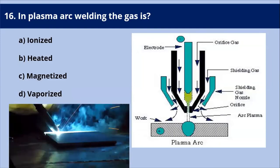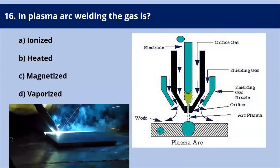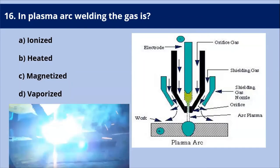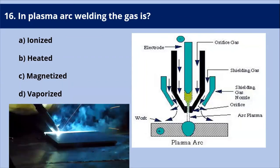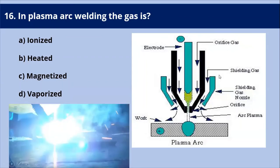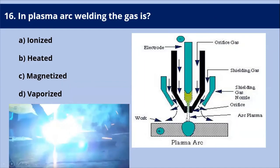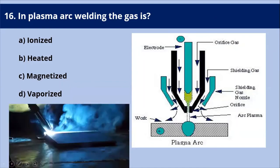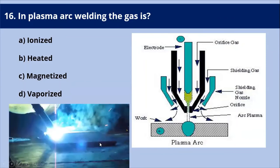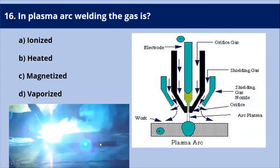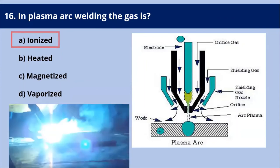Next question: in plasma arc welding, what happens to the gas? In plasma welding, the gas is actually ionized. The tungsten electrode is placed in the torch and the arc is infused with the gas, causing the gas to ionize, which conducts the electric arc. So the answer is A: ionized.